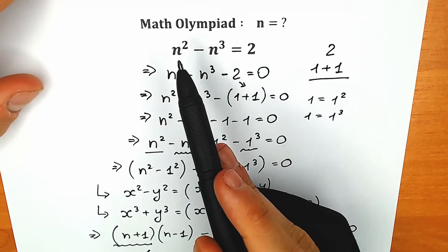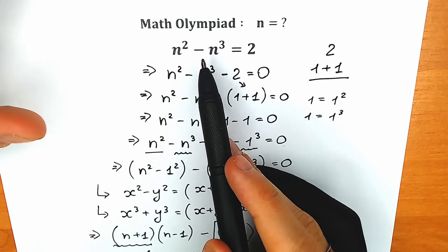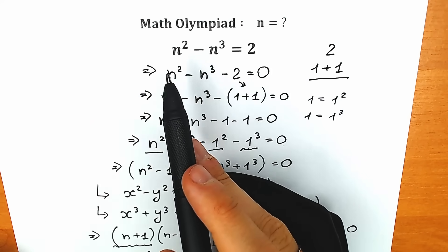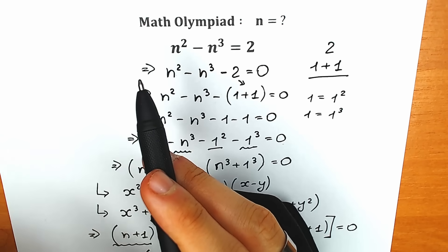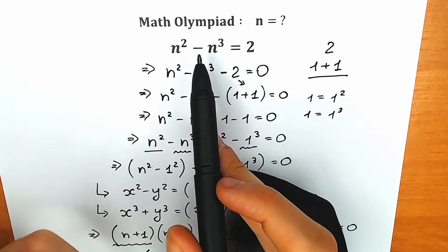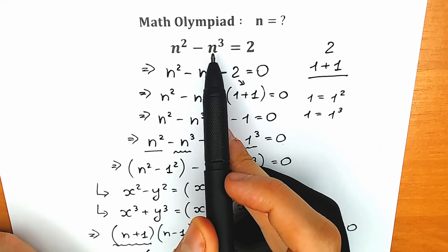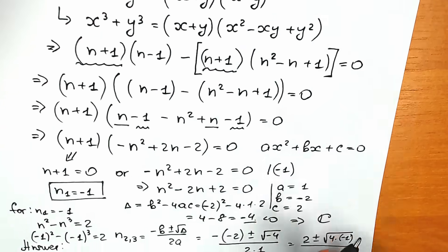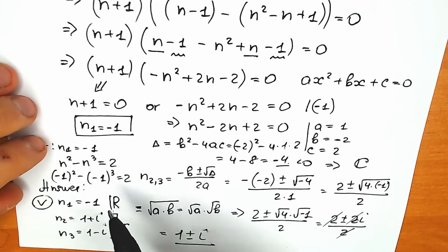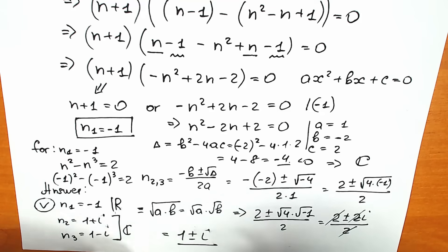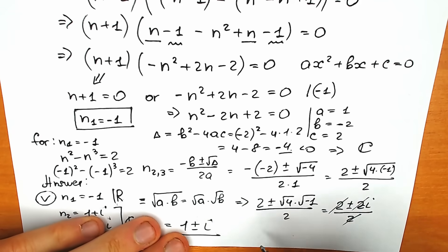And of course, we can easily see that we do have three roots. This trick is extremely important because sometimes you have a cubic equation, solve it, and say you have four roots — that would be wrong according to the Fundamental Theorem of Algebra, because you can't have four roots from a cubic equation. The highest power tells you the total number of roots.